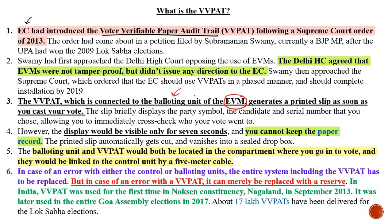VVPAT generates a printed slip as soon as you cast your vote — you can see this slip for 7 seconds. The slip shows the party, candidate's name, symbol, and serial number, so you can cross-check your vote. The display is visible only for 7 seconds, and you cannot keep the paper — behind a transparent glass, the printed slip automatically gets cut and falls into a sealed drop box.